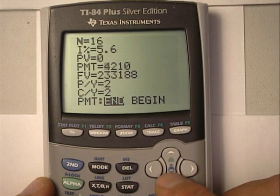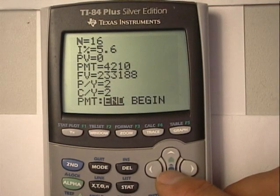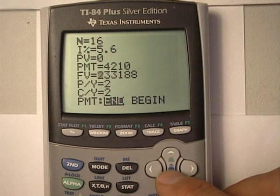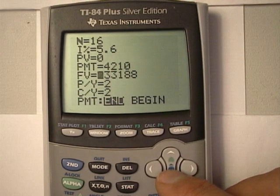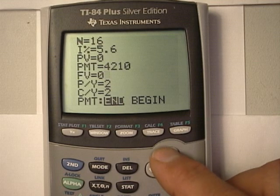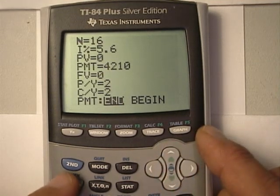So normally we would be interested in finding out the future value, but that's not of great interest to us. We want to find the present value. Let's just set that to zero just so it's not confusing.